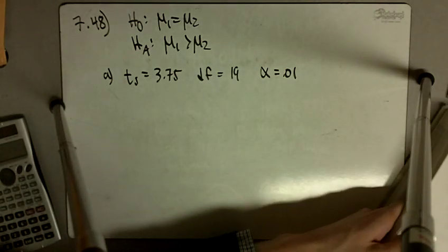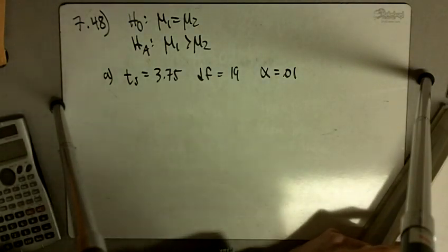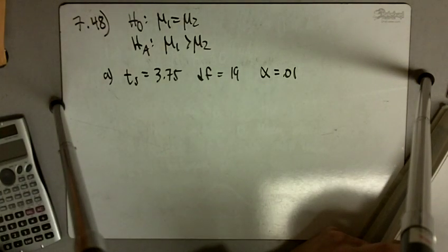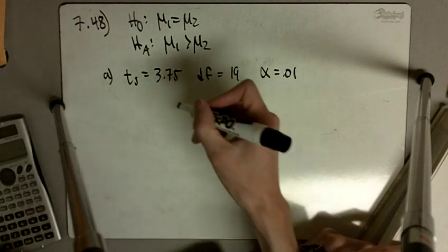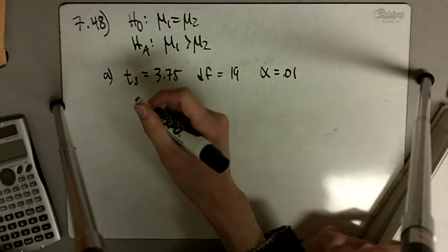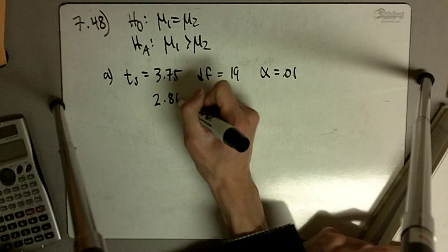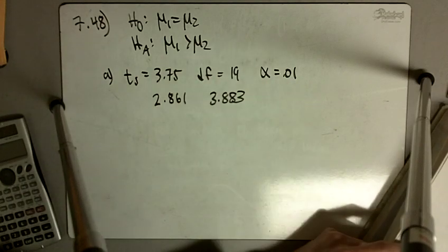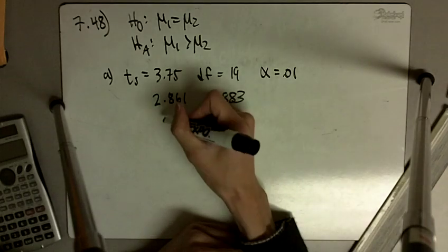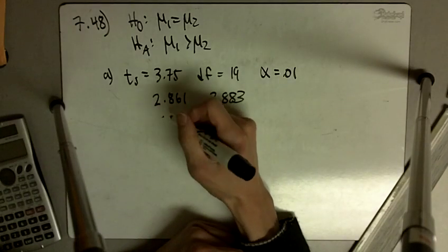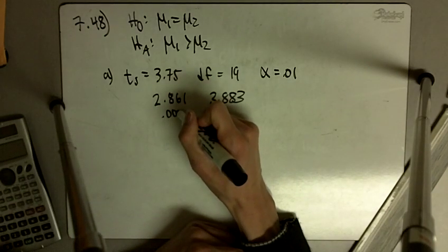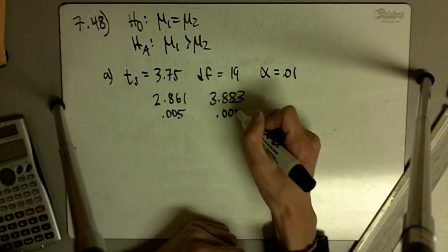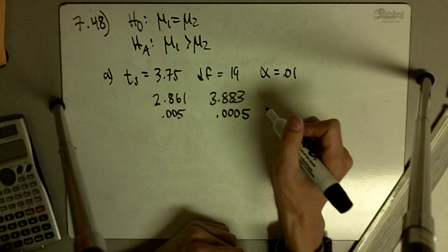So we go to the t-table in the back of our book, we look up 19 degrees of freedom, and we look up 3.75. 3.75 is in between 2.861 and 3.883, and 2.861 corresponds to an upper tail probability of 0.005, and 3.883 corresponds to an upper tail probability of 0.0005.